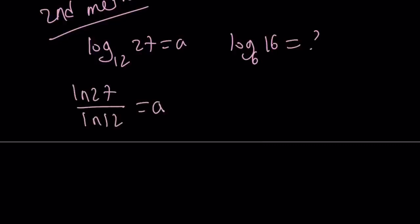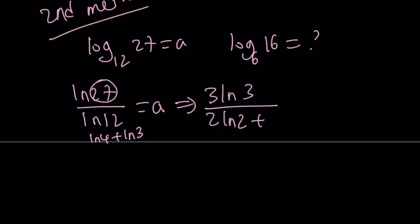I'm choosing change of base. Now, 27 is 3³. So can I write this as 3·ln(3)? Hopefully you allow me to do that. And this is ln(4) + ln(3), because ln(12)—12 is 4 times 3, and we're using the properties. So can I write the ln(4) as 2·ln(2) + ln(3)? Hopefully that makes sense. And this is equal to A.